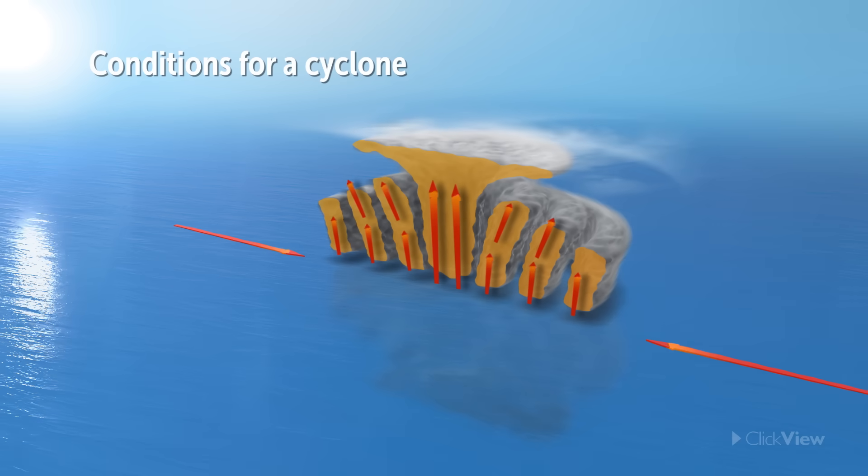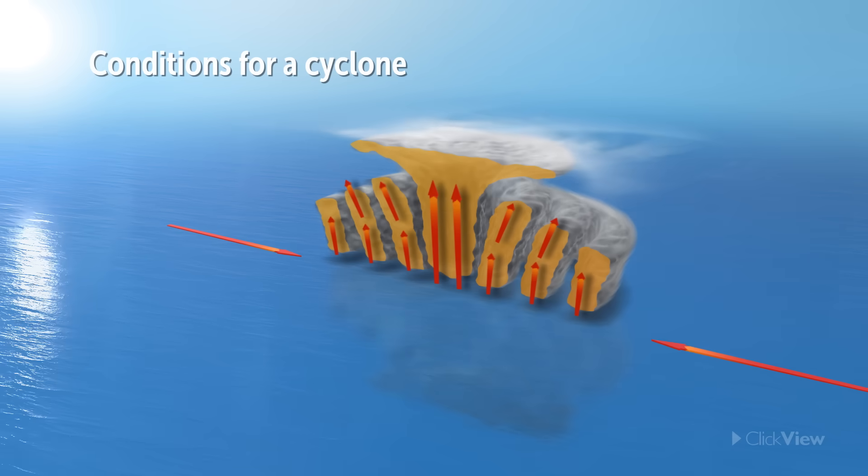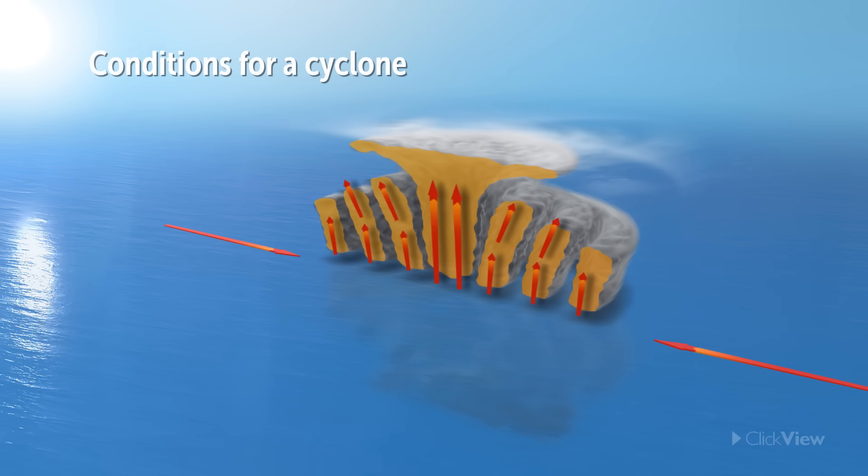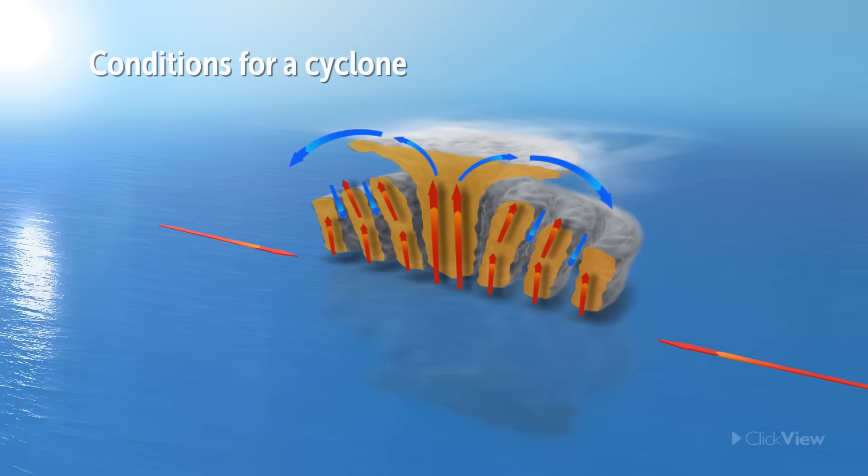The rising drafts of air carry moisture high into the atmosphere, so that these clouds eventually become very thick and heavy. Condensation then releases the latent heat energy stored in the water vapor, providing the cyclone with more power. This creates a self-sustaining heat cycle.